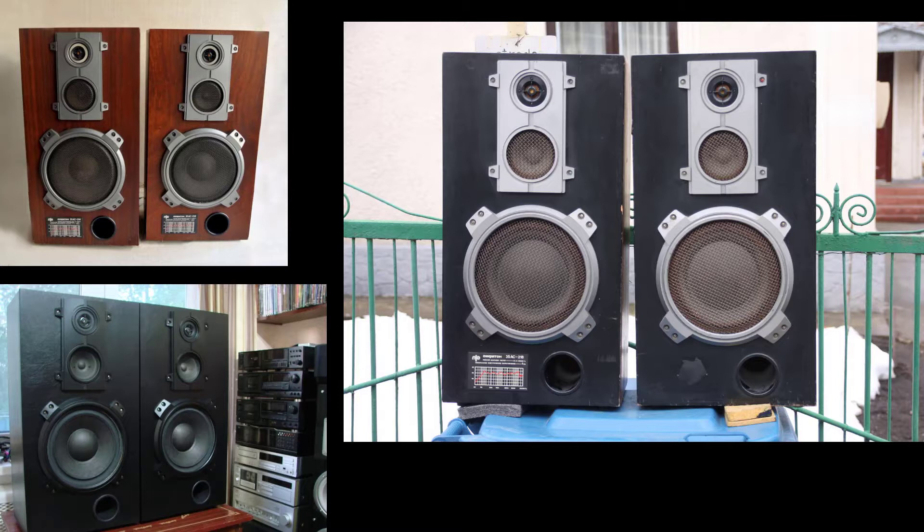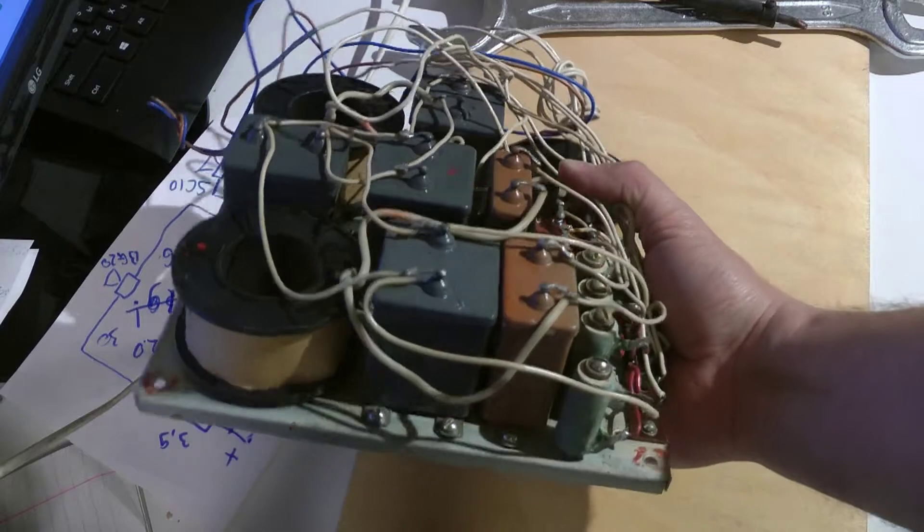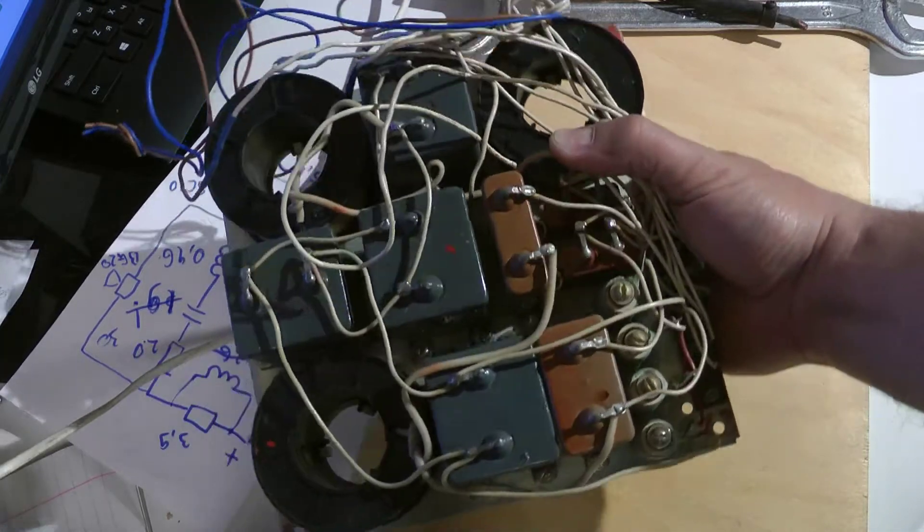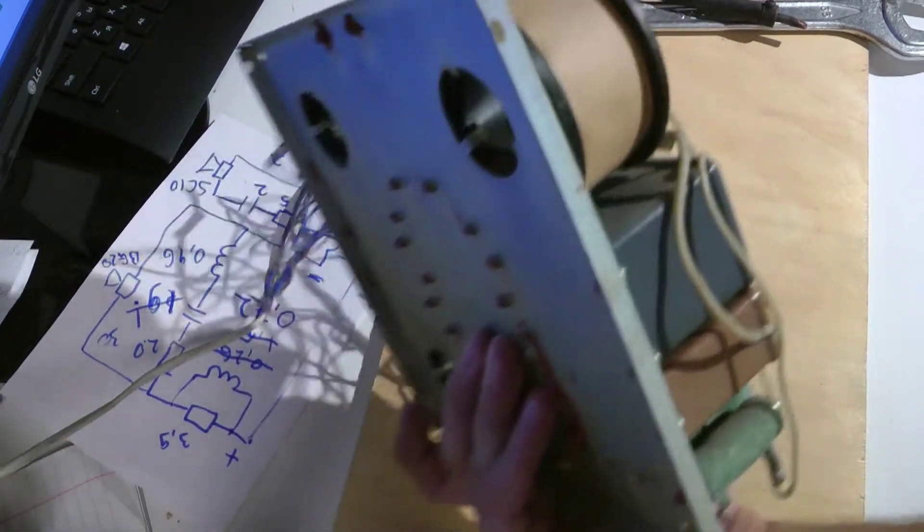I bought old filters from Soviet acoustic systems. This is what the sound system looks like, and this is what the filter from this speaker looks like. The approximate cost of two such filters is $30.